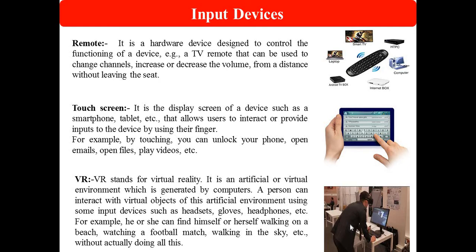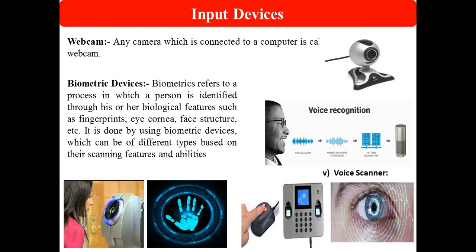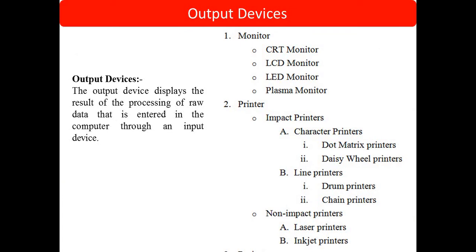Next is the touch screen, which we all use in touchscreen mobile phones to give instructions to the computer. Next is virtual reality — many times in malls, in a game zone, you can play cricket virtually; you imagine a ball coming toward you and hit it with a bat. Next is the webcam. Biometric devices include voice recognition, face scanner, hand scanner, fingerprint scanner, and retina scanner — all are biometric devices used to give input to the computer.